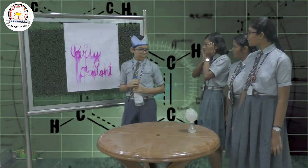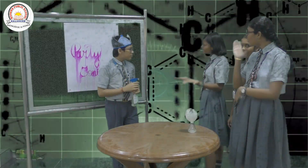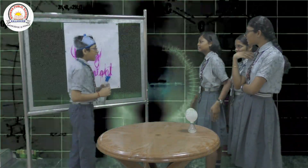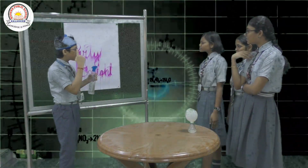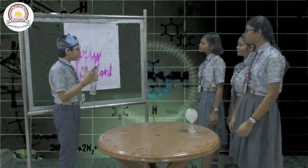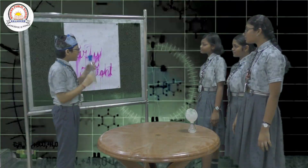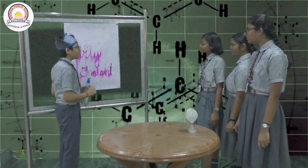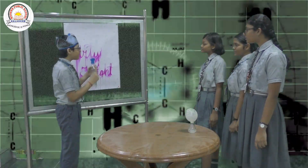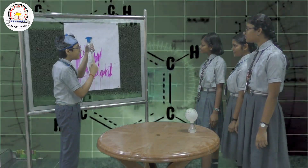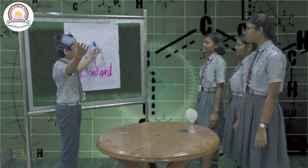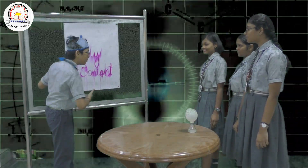What a surprise! A hidden invitation. How did you do that? I just used my knowledge about indicators. I wrote the message with phenolphthalein and then revealed it by spraying an alkaline solution and let the magic unfold.